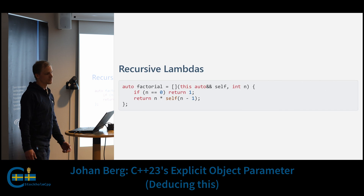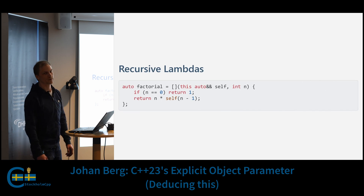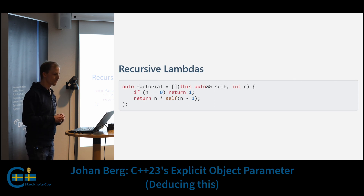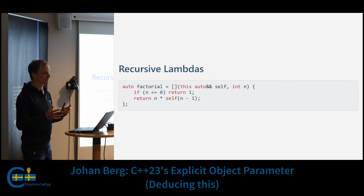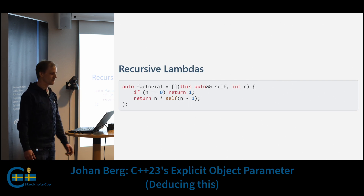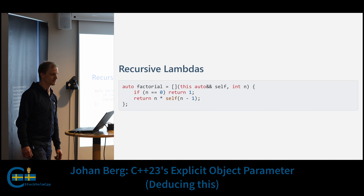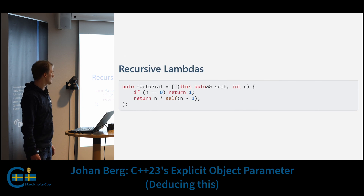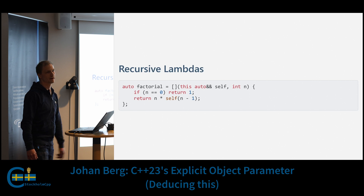Here's something that wasn't possible before: we can pass an explicit object parameter to a lambda, and by doing that we can access the closure object of the lambda and call the function operator on it. Here's an implementation of factorial — as you can see we're calling self inside the lambda body, giving us a recursive lambda.